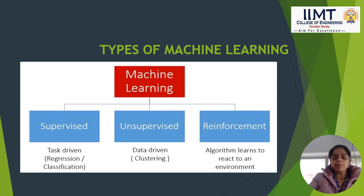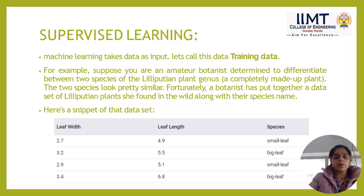Machine learning can be categorized into three types: supervised, unsupervised, and reinforcement learning. Supervised learning is task-driven; unsupervised is data-driven; and reinforcement learning is algorithm-based. Supervised learning is like a teacher supervising students and teaching subjects based on experience. In unsupervised learning, particular data is given and the model is asked to find patterns. In reinforcement learning, the model designs algorithms based on interactions with an environment.